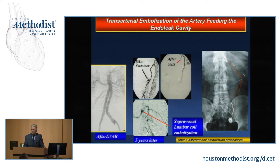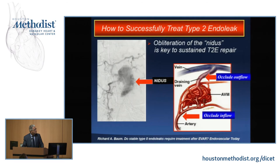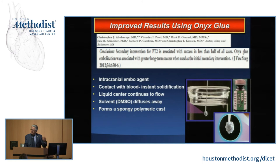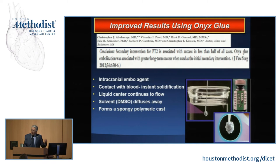To successfully treat type 2 endoleak, you have to approach it like an AV malformation — go to the nidus and occlude it. You have to resolve inflow and outflow, and the nidus itself has to be excluded. Onyx has been very popular for the last decade, originating in intracranial interventions. Its advantages are that it solidifies relatively fast, contains tantalum powder so it's easily visible, and effectively resolves the problem.